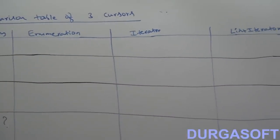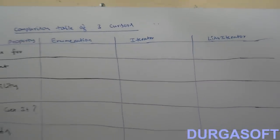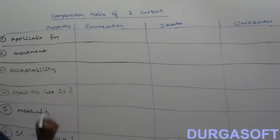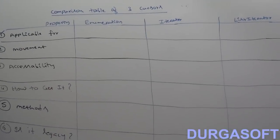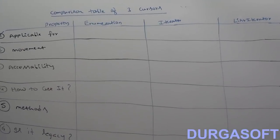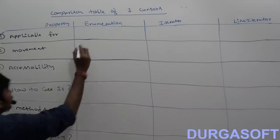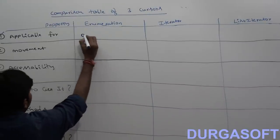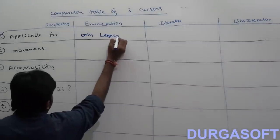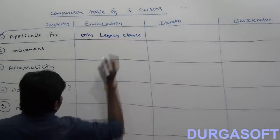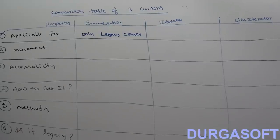The first property is: where is each concept applicable? Enumeration is applicable only for legacy classes. It is not a universal cursor — it is applicable only for legacy classes.